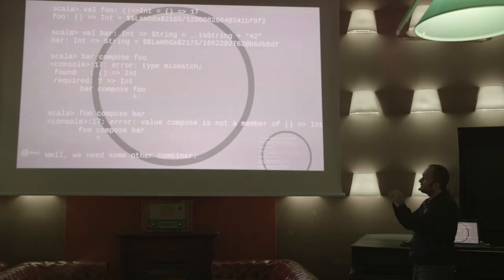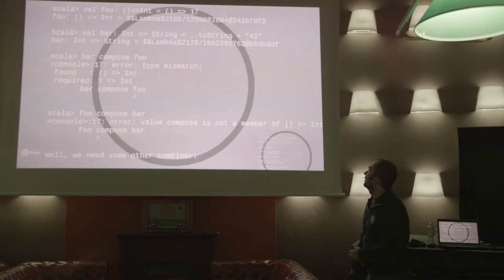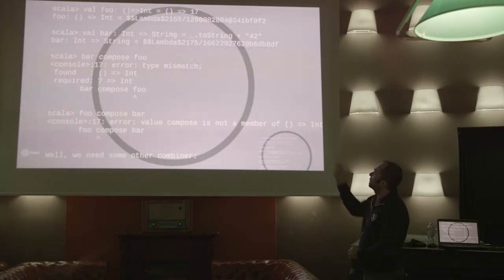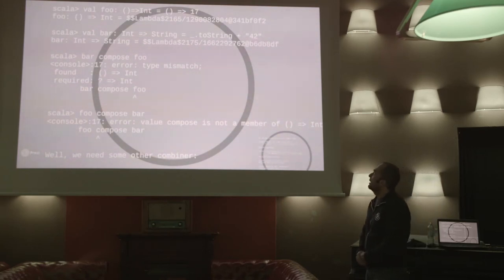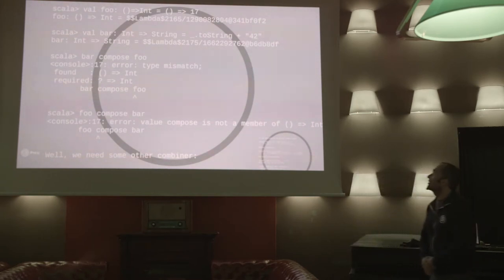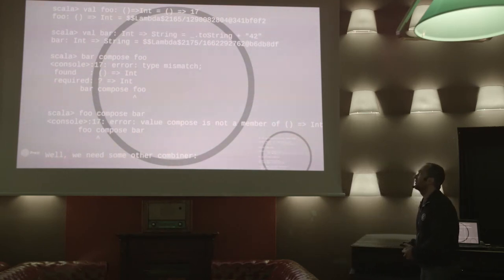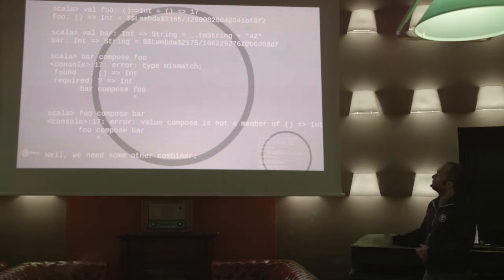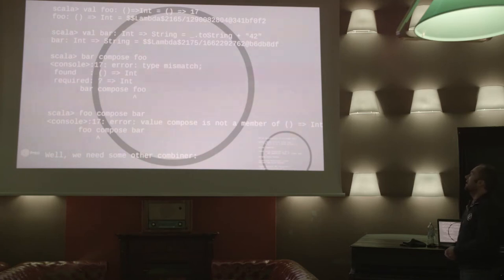I have two functions. The first one is a nullary function which gives me back an integer. I have another function, a bar function, which is a unary function — it takes an integer and gives me back a string. And I tried to compose them. Fortunately, we cannot do this — the compiler is claiming that something is wrong with it in whatever order we try. So it means that I cannot combine these two functions.